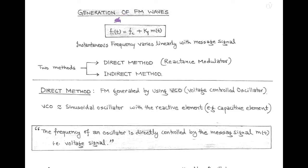Welcome friends. Our next topic is generation of FM wave. For the generation of FM wave, two methods are generally used: first is direct method and second is indirect method.